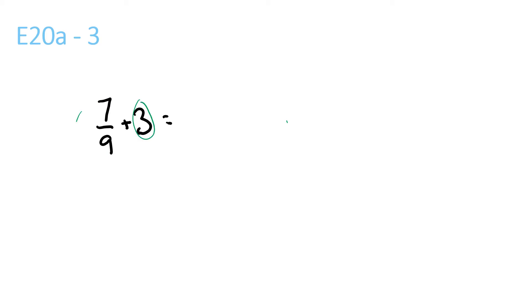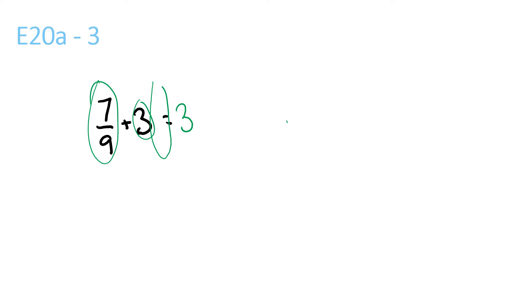3 plus nothing is equal to 3. 7 over 9 plus nothing is equal to 7 over 9. So the answer is 3 and 7 over 9.